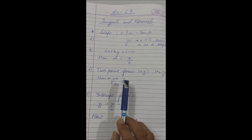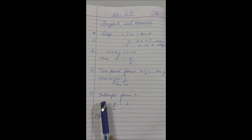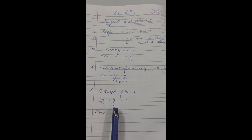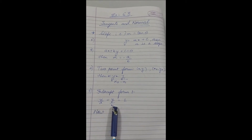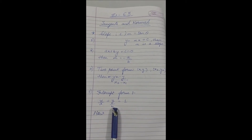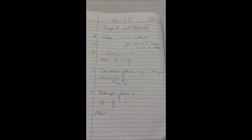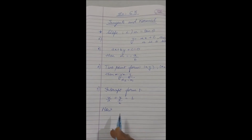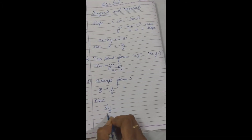Or you can use y1 minus y2 upon x1 minus x2. Now, simply intercept form: x by a plus y by b equals to 1, where a and b are the x and y intercepts. This is for finding the equation of line, not for finding m. In this chapter, we will study about slope where we find slope using dy by dx.